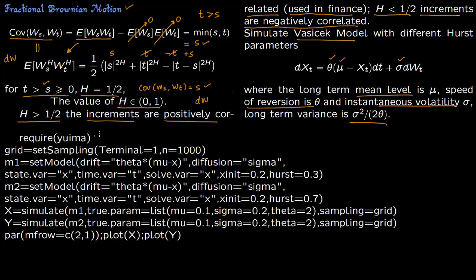So you require the Yuima package. We are going to set the grid here for a thousand simulations. So the model is as such as before. This is the drift. So drift is theta times mu minus x. Diffusion is just sigma.